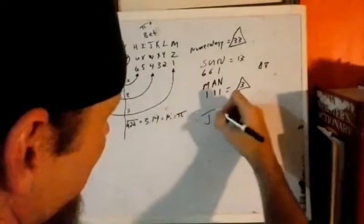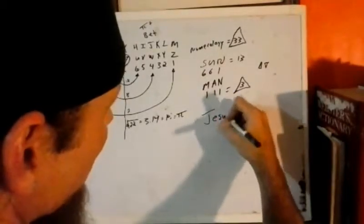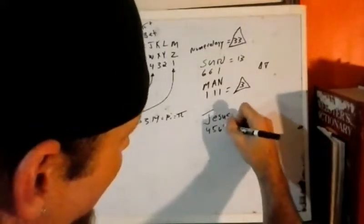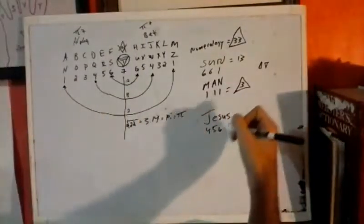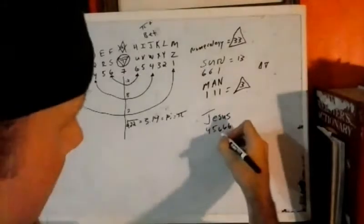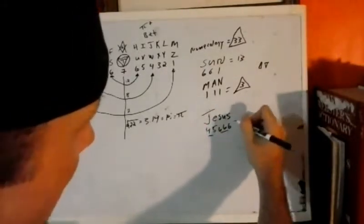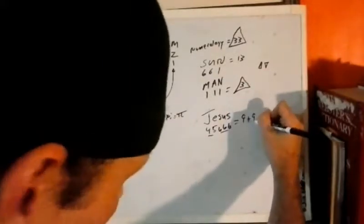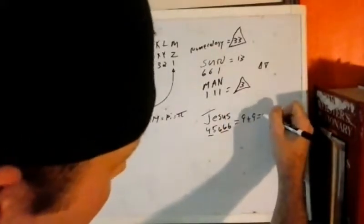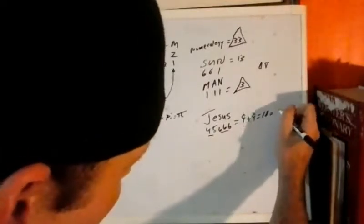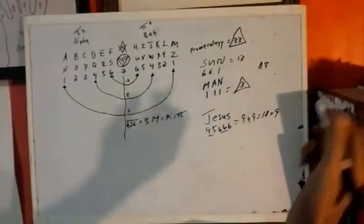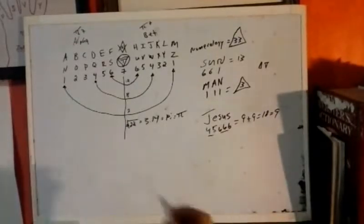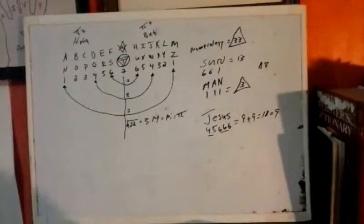And if you take Jesus, Jesus comes to 4, 5, 6, 6, 6, okay? Which this is 9, this is 9. That's the divine 9. And the divine 9, Abel's 18, which is 9 again. Divine 9. Which the Pharaoh said that comes, the Pharaohs come from the thighs of the divine 9.